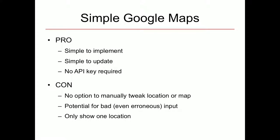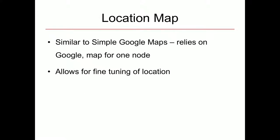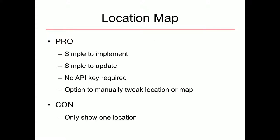It's also only for one location at a time. Location Map is similar but gives you a little more control — you can actually drag the pointer around to fine-tune the location. So the pros and cons are similar, but it has the added benefit of that extra bit of control.